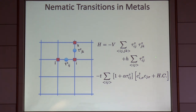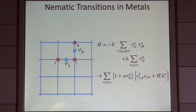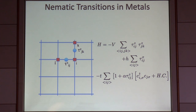This first term is just the model I wrote down before — I changed J to V because I'm going to show Monte Carlo results later and V is the symbol used there. This is nearest-neighbor pseudo-spins on the bond lattice interacting with each other with some quantum dynamics. Then there are electrons that live on the direct lattice, and the hopping matrix element of the electron from site i to site j is bigger or smaller depending upon whether the pseudo-spin on that bond is up or down. That couples the nematic degrees of freedom to an electron gas.